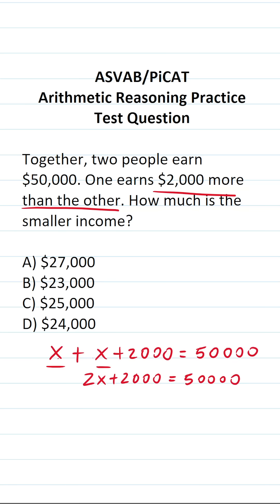The next thing we want to do is subtract 2,000 from both sides of the equation to get 2X by itself. This crosses out. This says 2X equals 50,000 minus 2,000. You should be able to do that mentally. It's going to be 48,000.